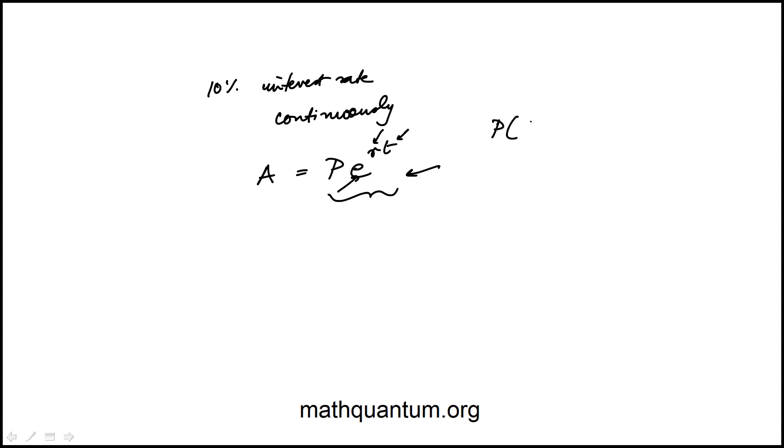You might be familiar with the compound n compounding in a year where you take the rate, divide by the number of times of compounding, and then you multiply the number of years by the number of terms. So n, for example, if it was a monthly compounding, n would be 12, and that's the expression.